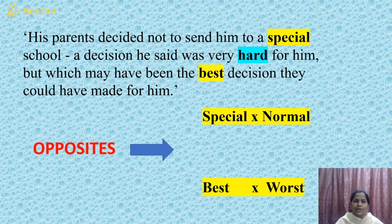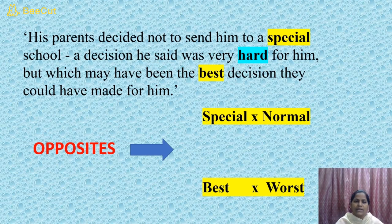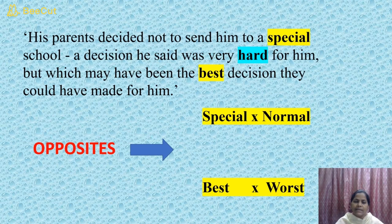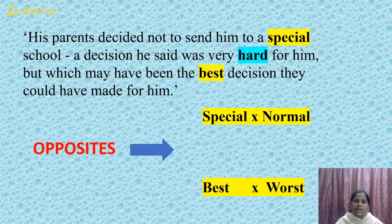His parents decided not to send him to a special school — a decision he said was very hard for him, but which may have been the best decision they could have made for him. What is a special school? What is the meaning of the word 'special'? Something not normal, not common. Here the opposite of the word 'special' is 'normal', or we can also say 'common'.